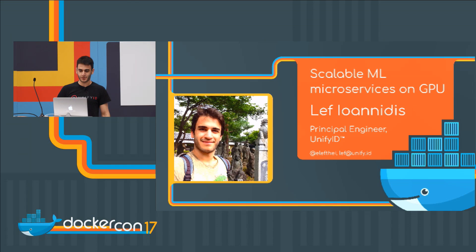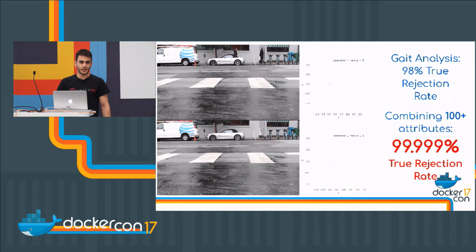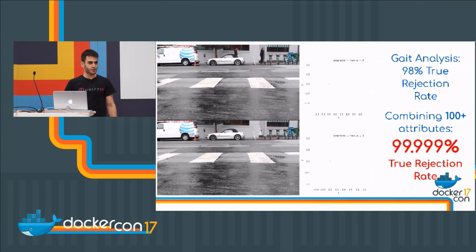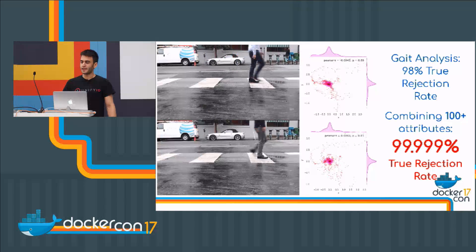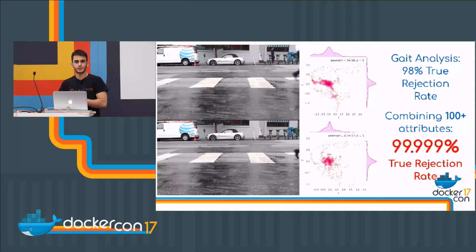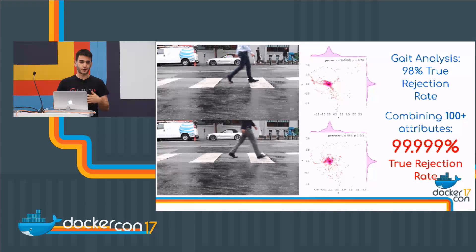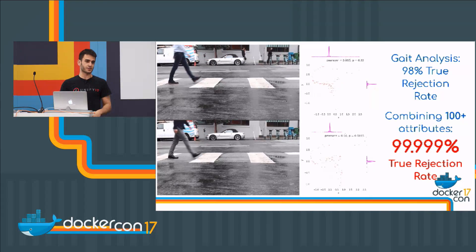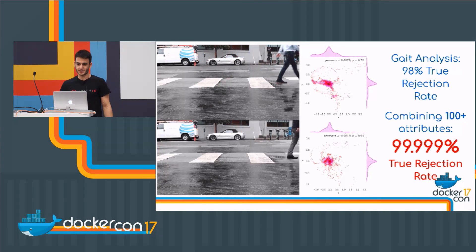Hey, my name is Lev. I'm the principal engineer at UnifyID. We're revolutionizing authentication by detecting all the things that make you unique — things like the way you walk. Everybody walks in a different way. We can tell that from sensors in your smartphone or wearables. And that's only one of a hundred different attributes that we data mine to figure out your unique model for each user. So thanks to UnifyID, in a few years hopefully you won't need passwords anymore to use your favorite services.